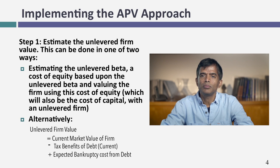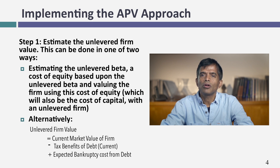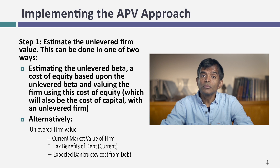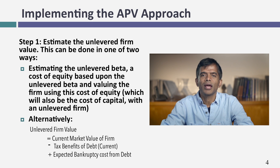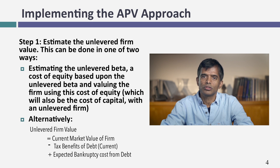The first step is to estimate the value of your business as if it had no debt — an unlevered firm value. There are two ways to do this. The first is a full-fledged valuation where you project cash flows to the business and discount them back at a cost of capital with no debt, using an unlevered cost of equity. There's also a shortcut: start with the market value of the business, take out the tax benefits of existing debt, and add back the expected bankruptcy cost to get the unlevered firm value.